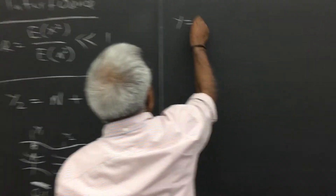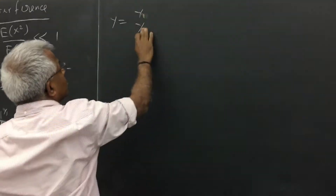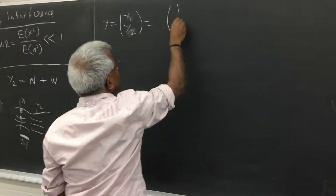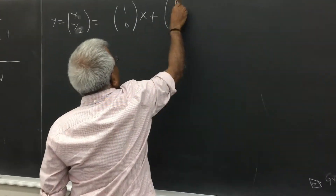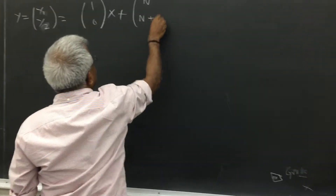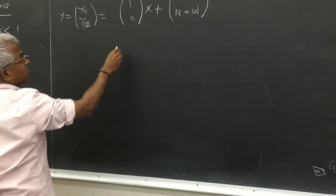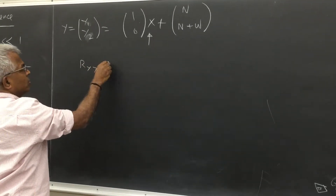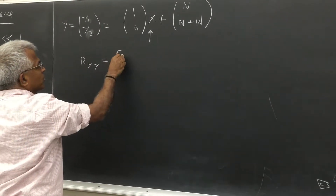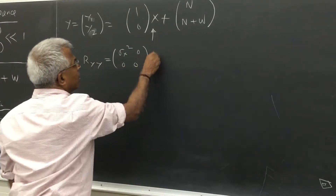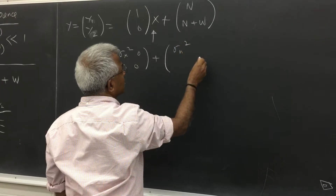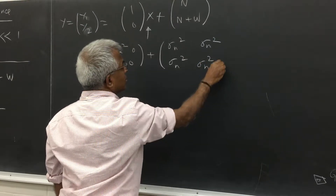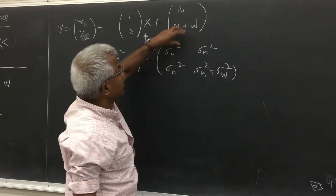If I put the two data together — y1 and y2 — and write this in matrix form, I can write this as A·x plus noise. Here, the desired signal is x. Ryy would be computed as A · sigma x squared · A transpose, giving sigma x squared in the (1,1) position and 0 in the off-diagonal, plus the noise covariance matrix, which is sigma n squared.